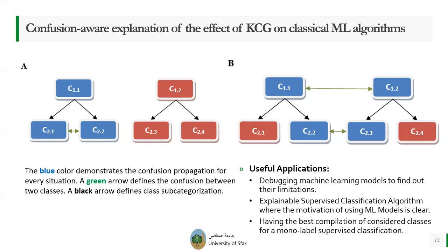We believe that such an explanation can have a very useful set of applications. It can be useful to debug machine learning models to find out their limitations. It can be used to define explainable supervised classification algorithms, where the motivation for using each machine learning model is clear. It can also be useful to determine the best combination of considered classes for a monolabel classification.